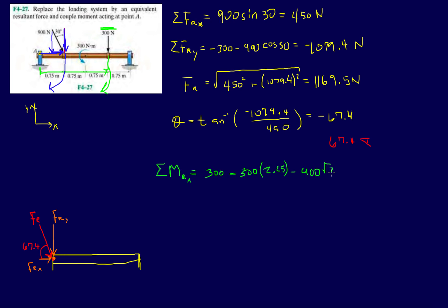Which will result in minus the Y component of that 900: minus 900 cosine 30, times the distance 0.75. Now let's sum everything up.